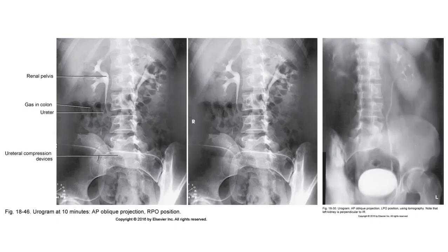Take note in these images of the RPO and LPO urinary system. These allow for a profile view of the kidneys side up, while freeing the ureter of the spine for clear visualization on the side down.